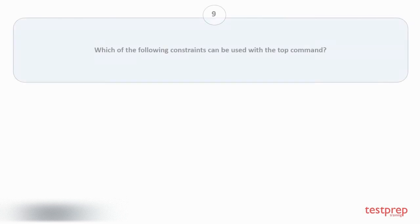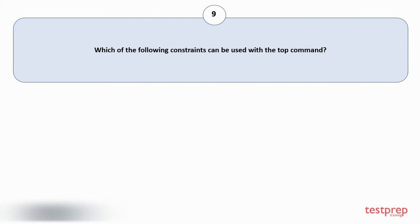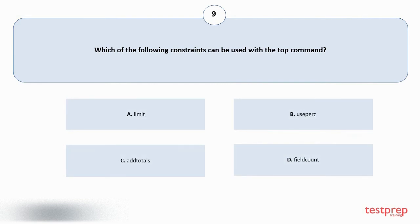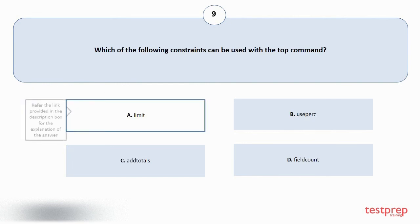Question number nine: which of the following constraints can be used with the top command? Your options are shown on screen, including option A) limit. The correct answer is option A.